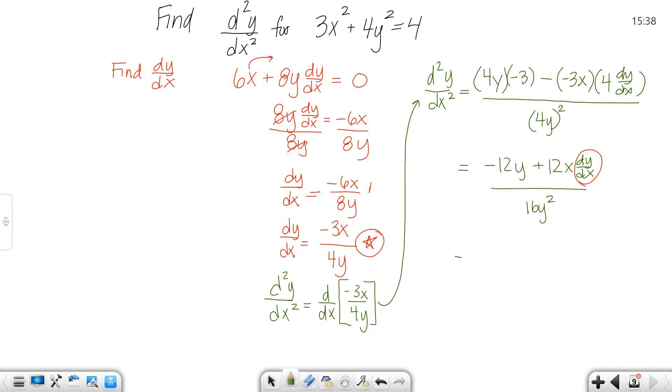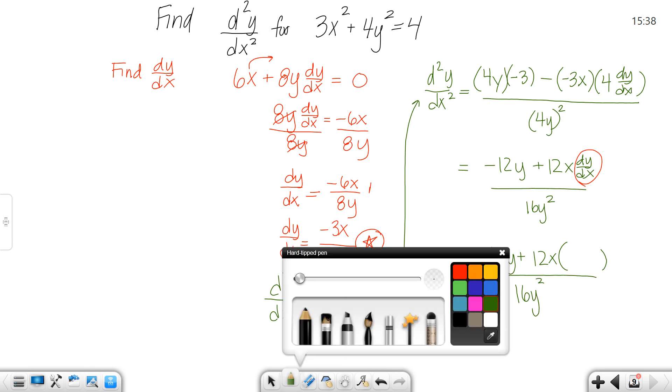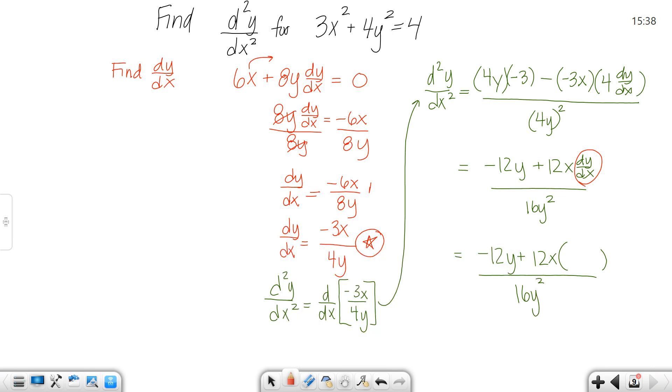Okay so let me write that out. We have negative 12y plus 12x times something over 16y squared here. In the previous column it says dy/dx equals negative 3x over 4y.